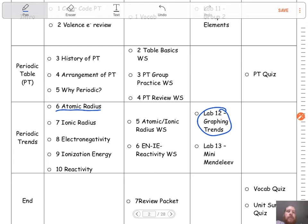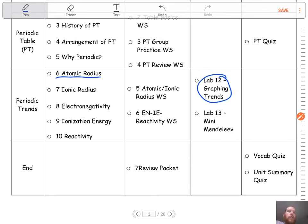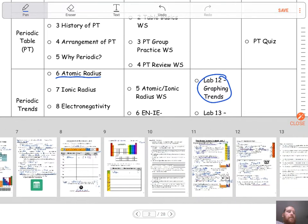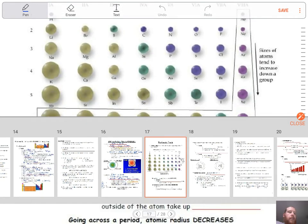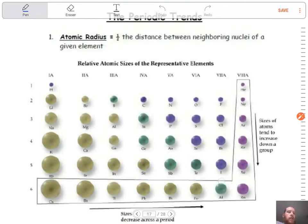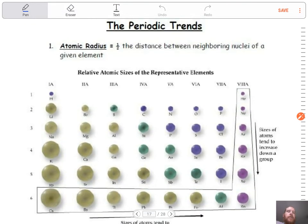When you get through these last five, you'll be at the end of the unit and can start working on the review packet and getting ready for your unit summary quiz. Let's jump right in and start talking about atomic radius. We'll be over here on page 17, and I tried to put some pictures in here for each. We'll go through and talk about those.